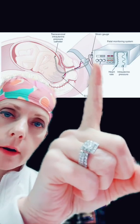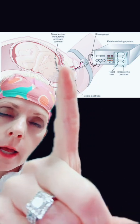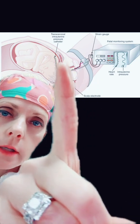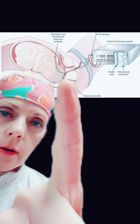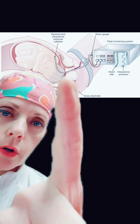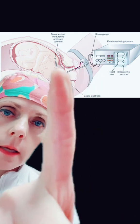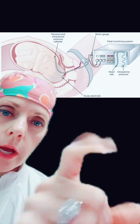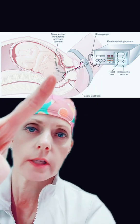So what we can do is take this device called an intrauterine pressure catheter and place it through the vagina, through the cervix, and up inside the uterus — you can see that right here. It goes through the cervix and up inside the uterus. This is an example of the fetal scalp electrode, but this is the intrauterine pressure catheter.